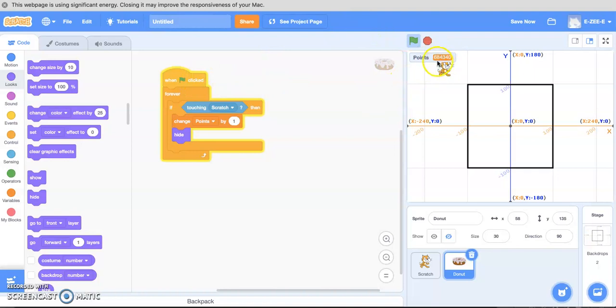But now we've got all these points that we don't want. Especially when we start the game. We don't want to start at 684,340 points. We want our points to start at zero.